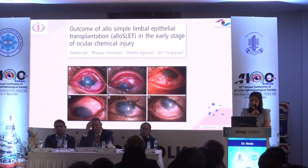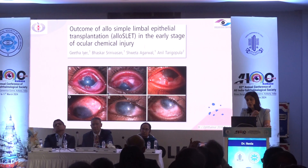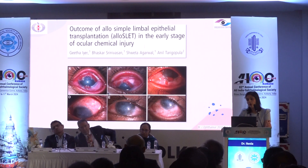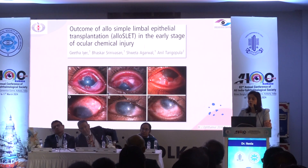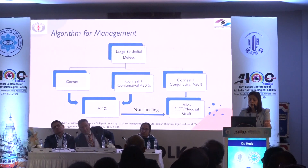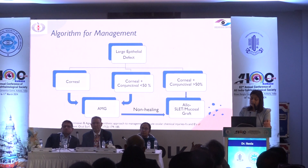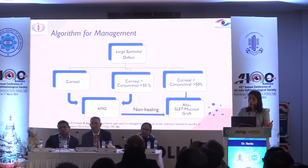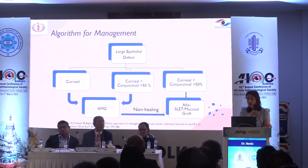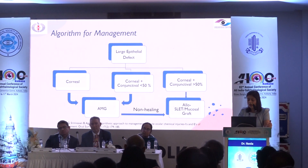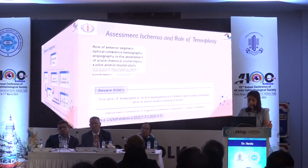The technique of alloslet has been described by the Sankara Nethralaya group, which helps in grade four and above burns. Epithelialization is faster with alloslet compared to amniotic membrane graft alone. For epithelial defects less than 50%, we can proceed with amniotic membrane graft; if non-healing, we should consider alloslet. For severe burns or large corneal and bulbar conjunctival defects, we can go directly to alloslet or mucosal grafts.